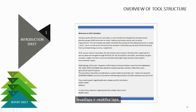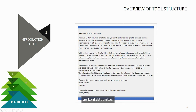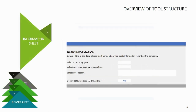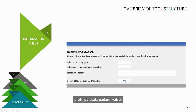The Introduction Sheet is a non-active sheet that describes the tool and its main aim, provides links to the manual and video tutorial, and a point of contact. The Basic Information Sheet is the first active sheet for information input, namely the reporting year, country, and the sector the company operates in.